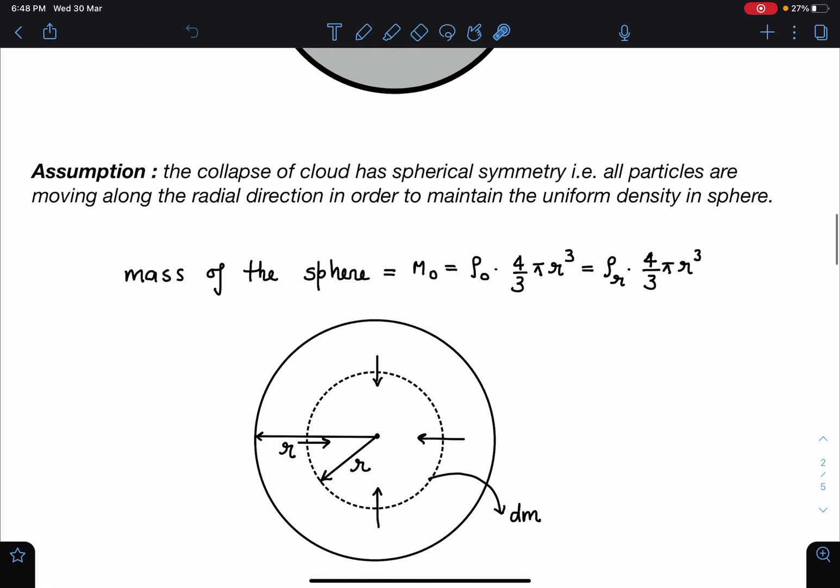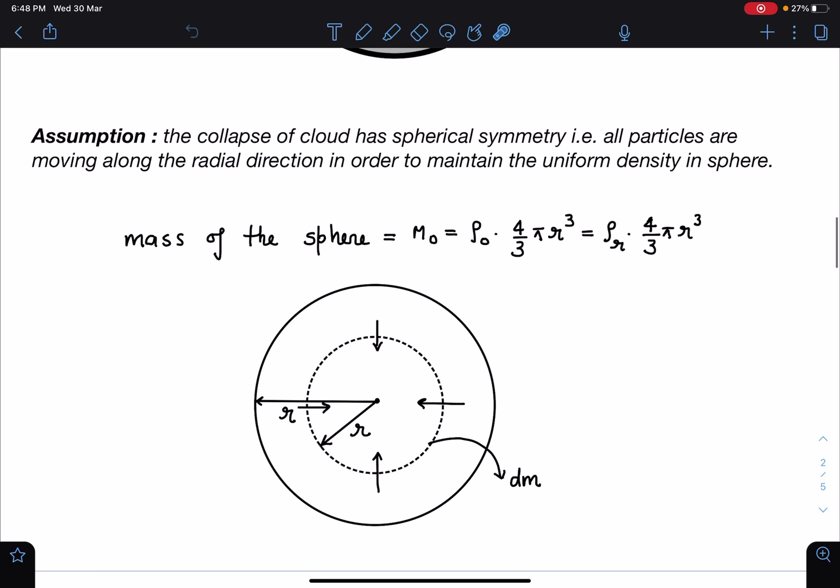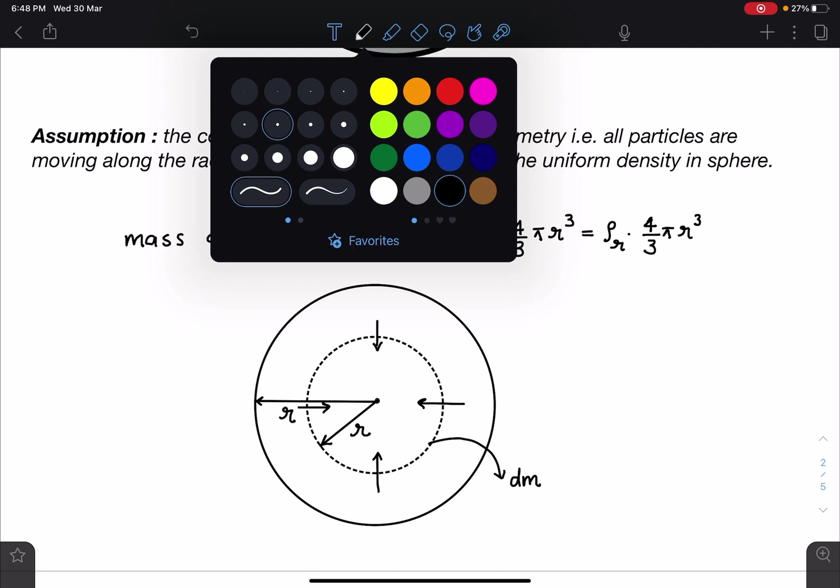The assumption we are following is the collapse of the cloud has spherical symmetry, meaning all particles are moving along the radial direction to maintain uniform density of the sphere. That means density is changing but for a given R in the entire sphere, that density is constant so we can use the formula or field formula for sphere of radius R. When radius is R0 and density is ρ0.